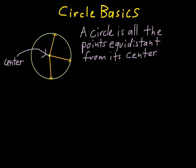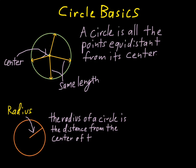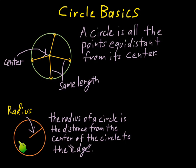No matter if you're at any point on the circle, all of those distances from the center are the same length. That brings us to the idea of a radius. The radius of a circle is the line that goes from the center of the circle to the edge — that's exactly the definition. The radius is the distance from the center to the circumference, or edge. That distance is the radius.